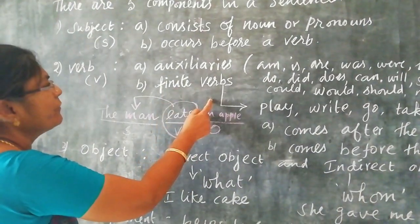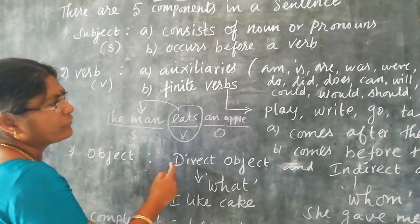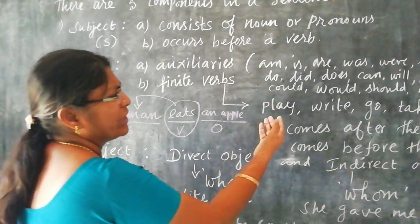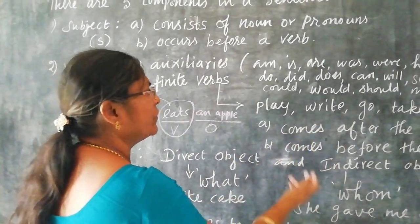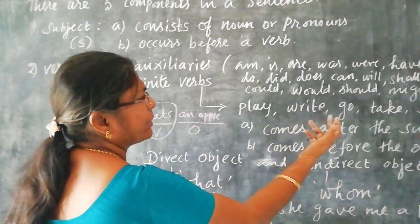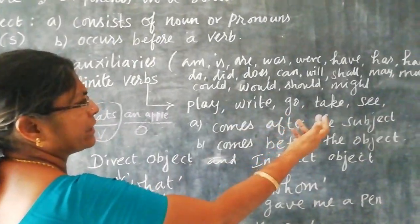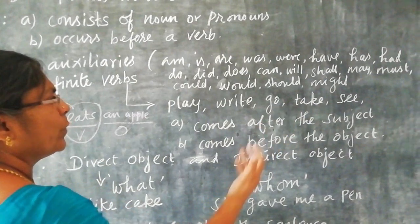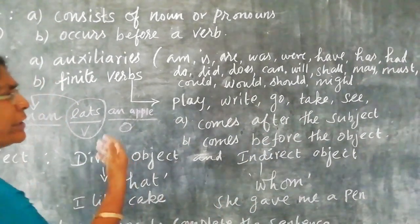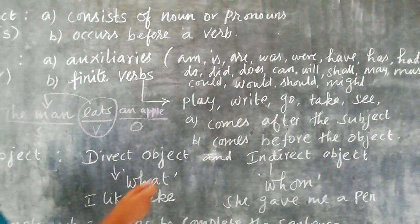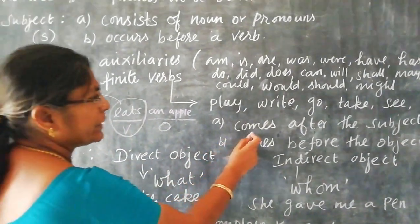When it comes to finite verbs, you can take any action verb — play, write, go, take, see, win. All these are finite verbs.